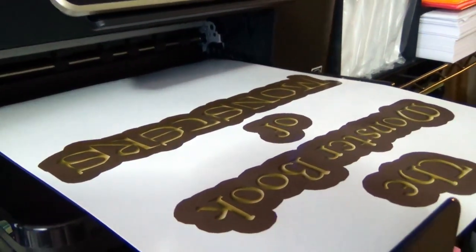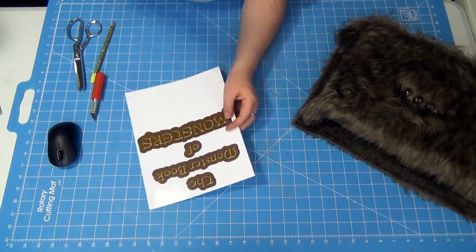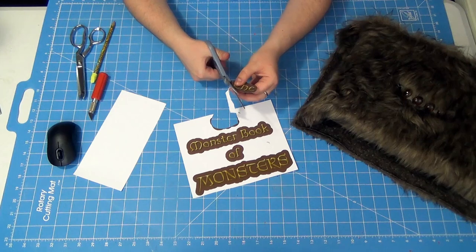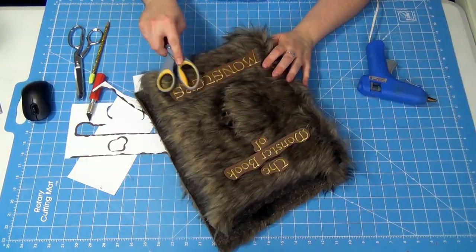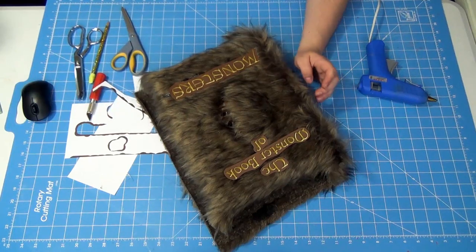Then print out the words 'Monster Book of Monsters' on a sturdy piece of cardstock or photo paper. I actually liked the semi-gloss look of the photo paper, so that's what I used. I will link to the printout below. Cut out the words and hot glue them in place. Use the handle of your scissors to press down on it as it's pretty hot.